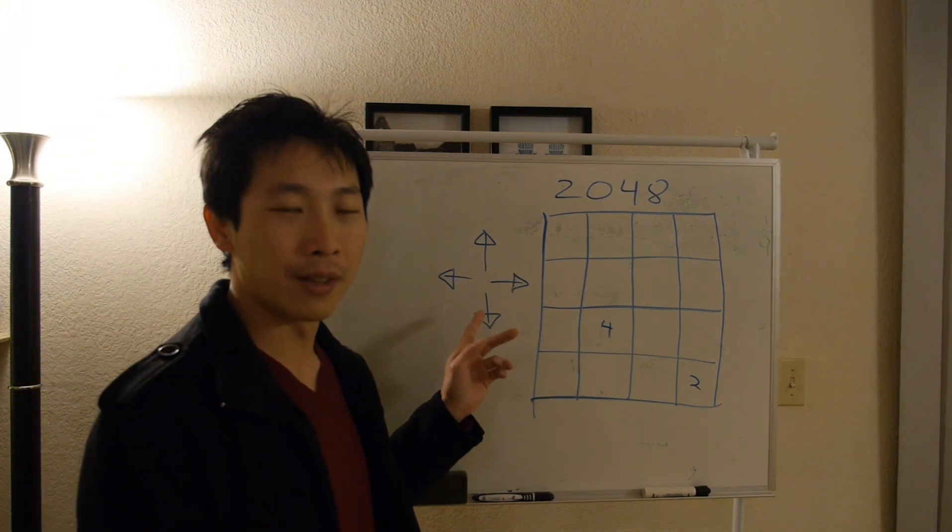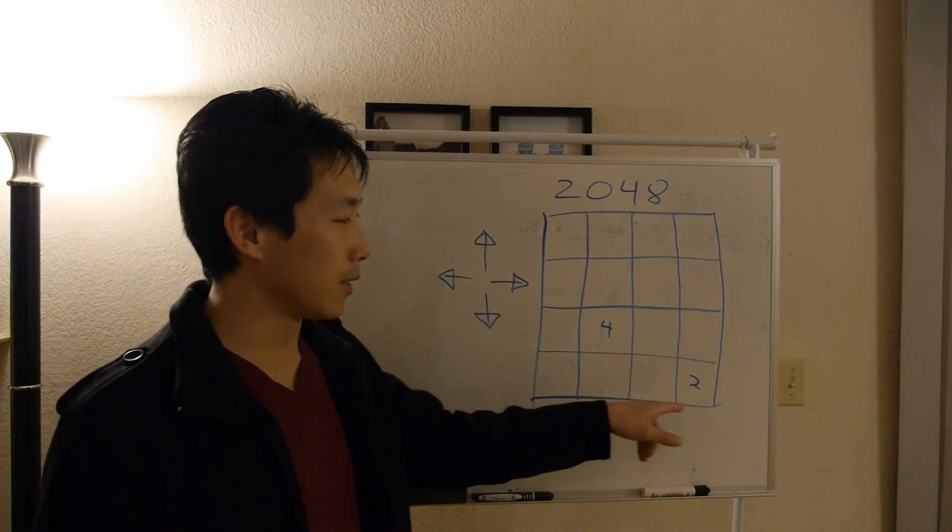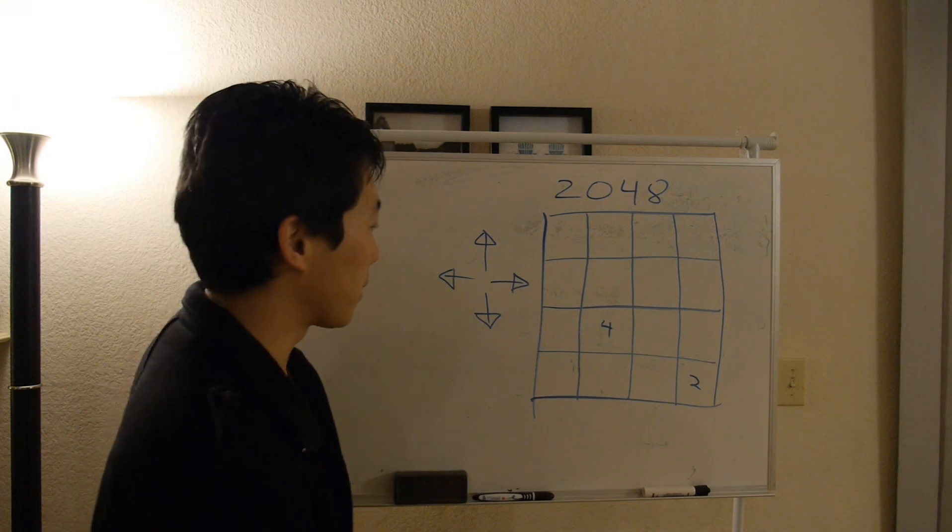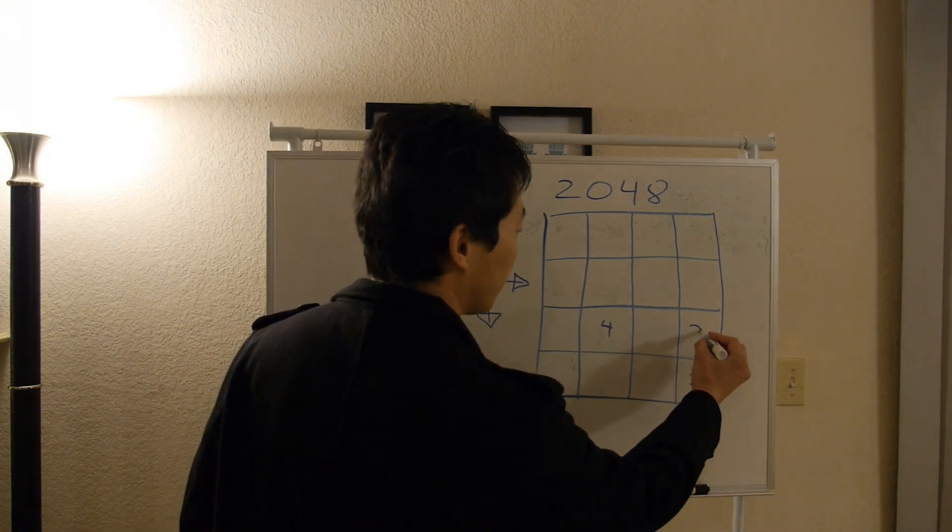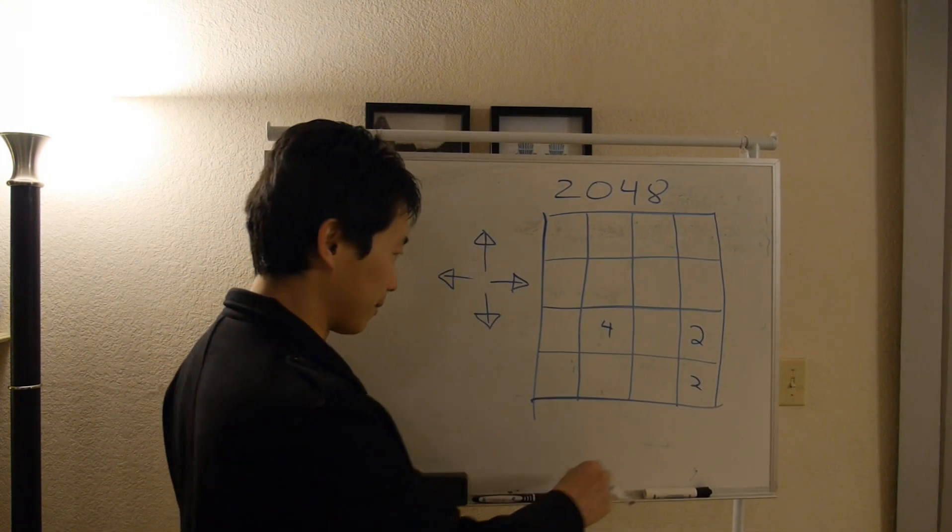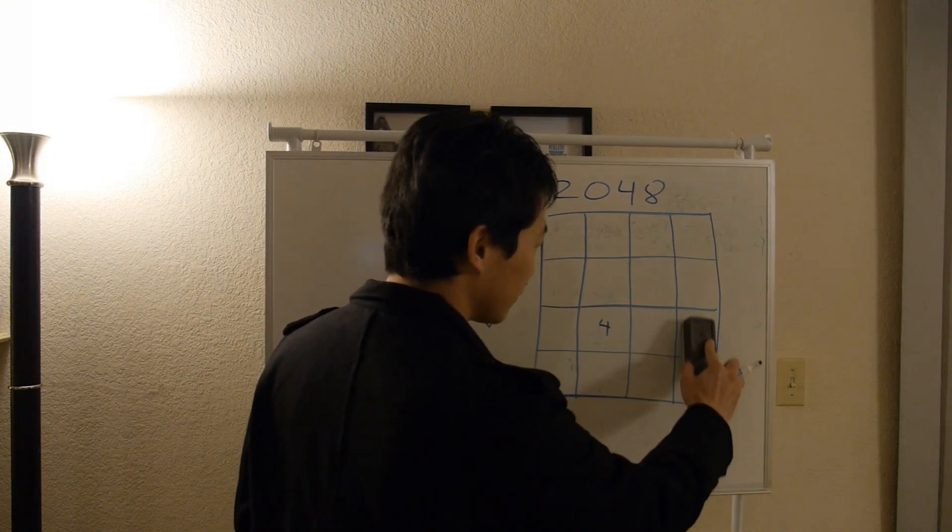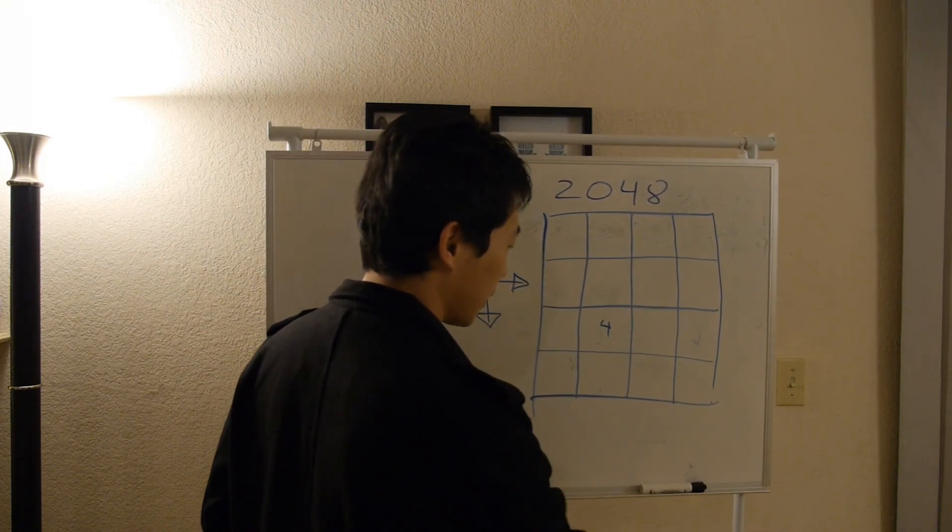The only controls you have is up, down, left, right. And when you join two numbers together, they become one. So if you push down, it becomes a 4.